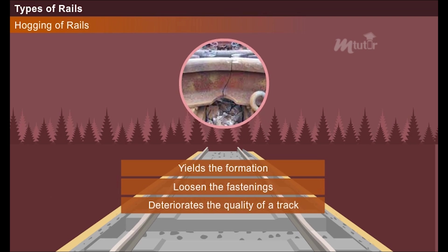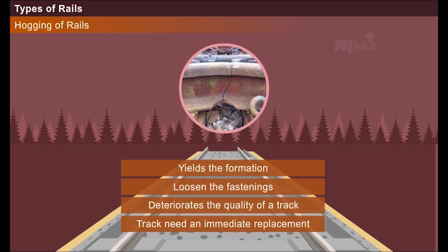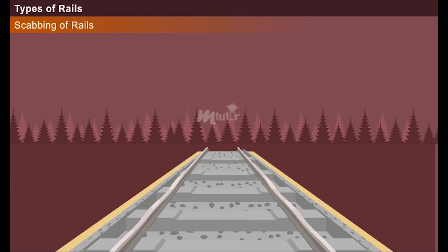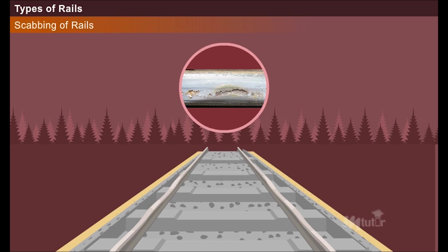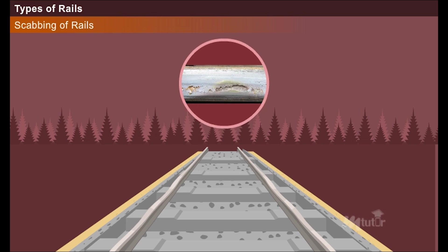At some sections, the rail gets hogged, which subsequently yields the formation and loosens the fastenings. This hogging greatly affects the quality of a track and demands an immediate replacement. Due to the constant movement of the trains, the metals on the rail surface get chipped out resulting in the formation of elliptical depressions. This defect is called as scabbing of rails.